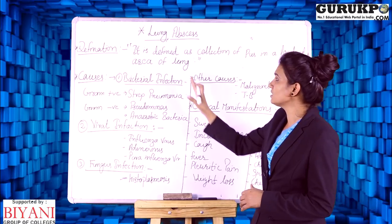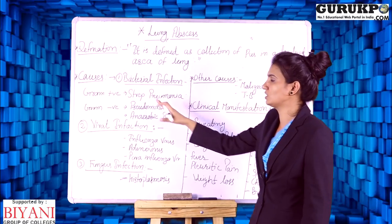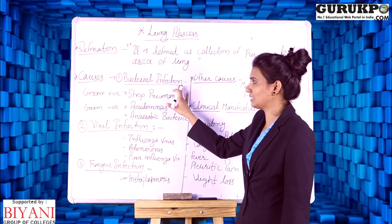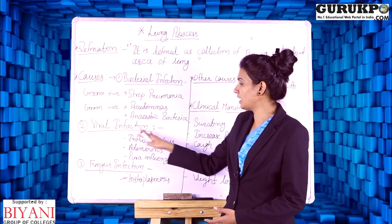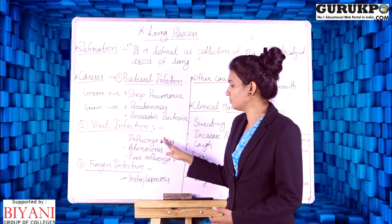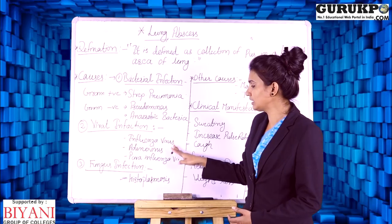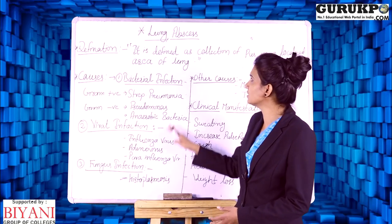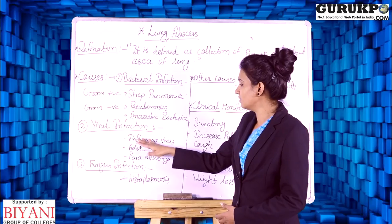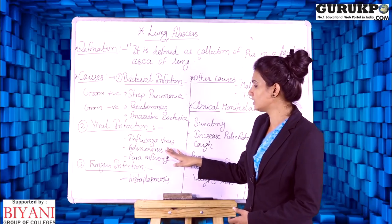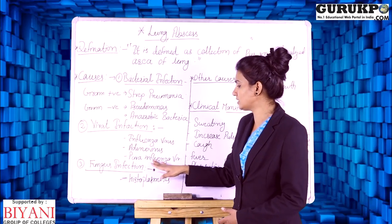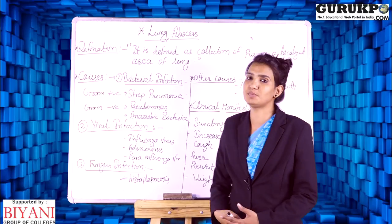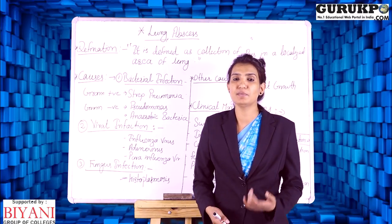Next are the causes of lung abscess. First is bacterial infection, second is viral infection. Viral infection includes three types of viruses that cause lung abscess: first is influenza virus, second is adenovirus, and third is parainfluenza virus.